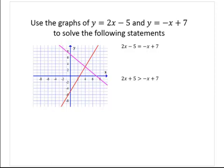In this graph, we see the graphs of y equals 2x minus 5 and y equals negative x plus 7. We're asked to use the graphs to solve the following statements. The first statement is the equation 2x minus 5 is equal to negative x plus 7. So the graph of y equals 2x minus 5 is in red, and negative x plus 7 is in purple. Where is 2x minus 5 equal to negative x plus 7?